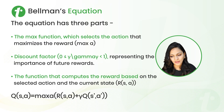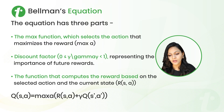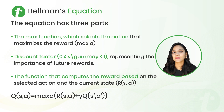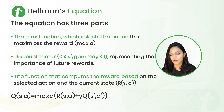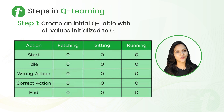So the max function is here. R(S, A) is our instantaneous reward, gamma is our discount factor, and Q(S', A') represents the Q-value for the next state. The whole Bellman's equation looks like this. Now let's see what steps we take to prepare our Q-value table.